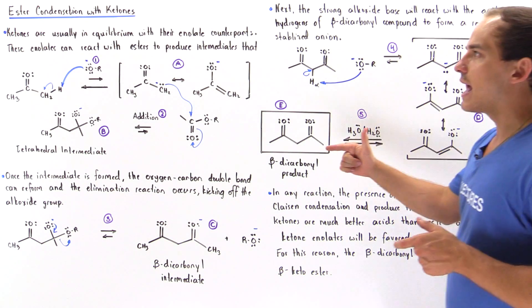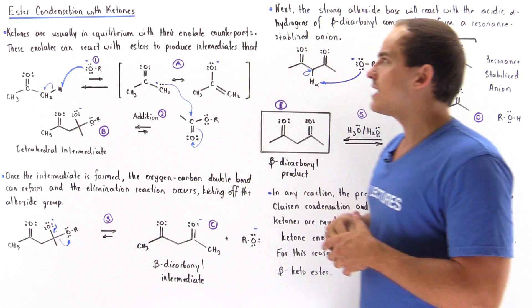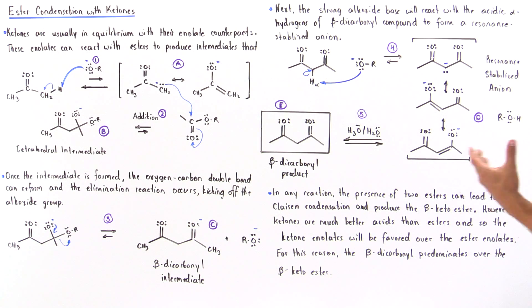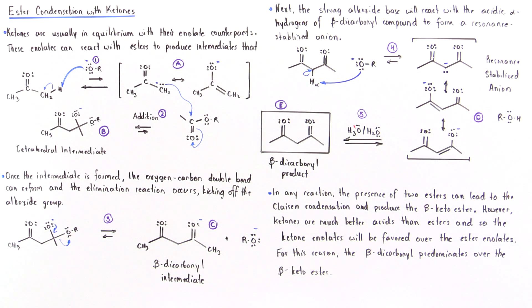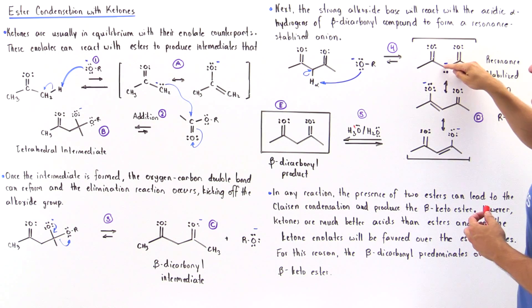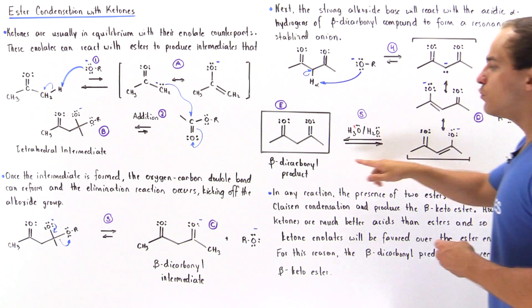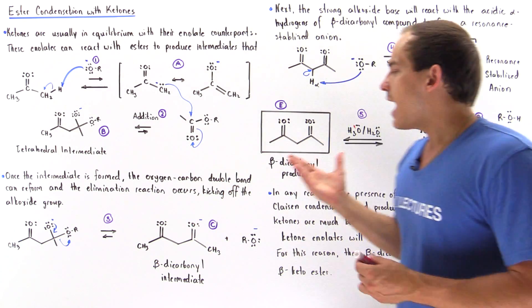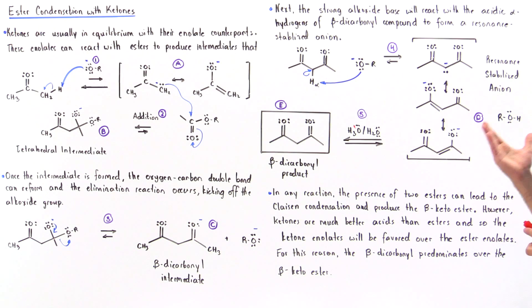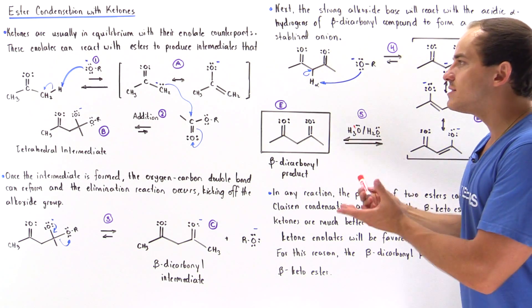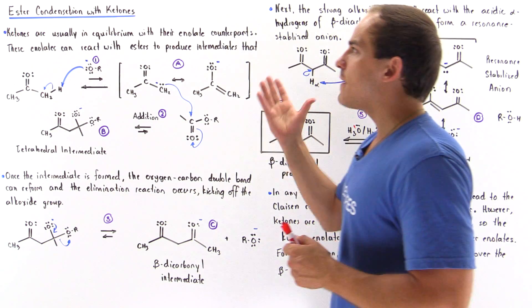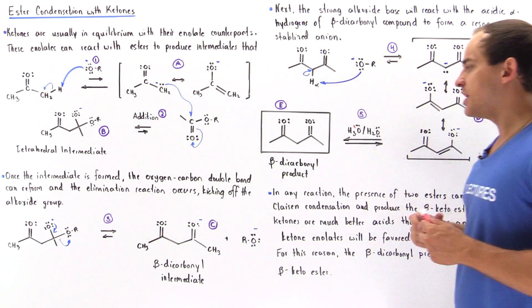In the final step of our ester condensation with ketones, we add acid in the presence of water — for example, hydronium — to protonate our alpha carbon and form the final product: our beta-dicarbonyl product that contains two carbonyl groups. This is the final product of our ester condensation with ketones.